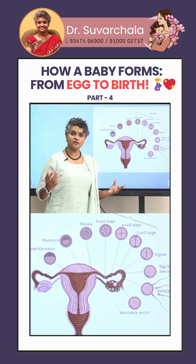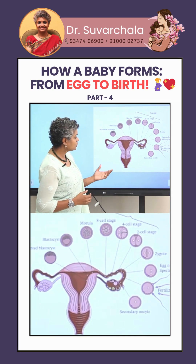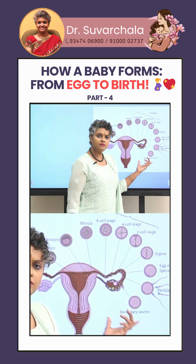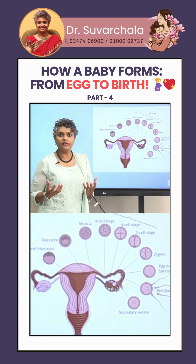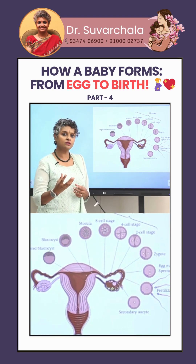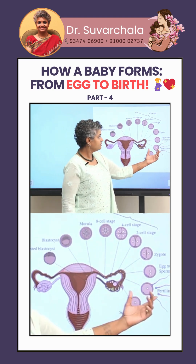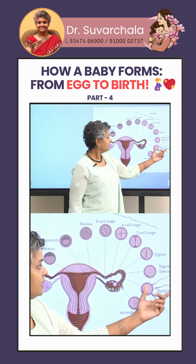Let us look at the stages of development of the egg. When the egg is released, it is called a dominant egg, which is most conducive for fertilization — which is when fertilization occurs.